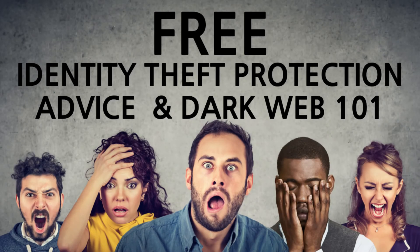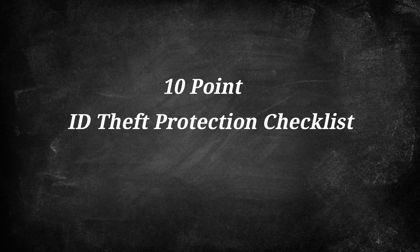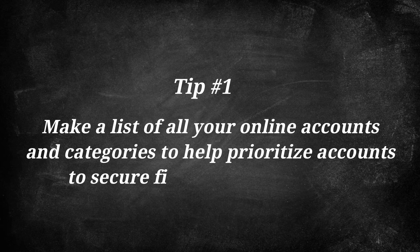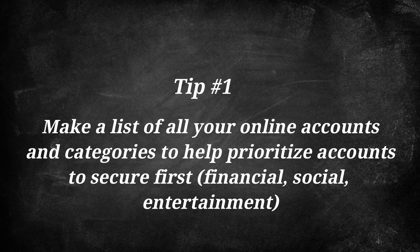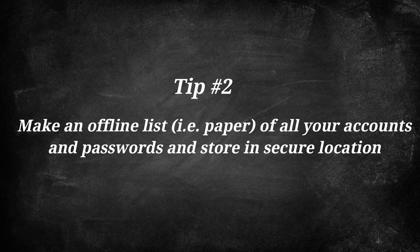In terms of general identity protection, there are a lot of things you can do if you are a victim of this type of attack to mitigate the downstream effect. Here is a 10-point checklist. There are many free and paid services available to prevent or mitigate identity fraud — please check out my previous video, Free Identity Theft Protection Advice in Dark Web 101. My quick 10-point checklist on ID theft protection is as follows. One: make a list of all your online accounts and categorize them to help prioritize accounts to secure first — think financial accounts, social media accounts, and entertainment accounts. Two: make an offline list on paper of all your accounts and passwords and store it in a secure location.